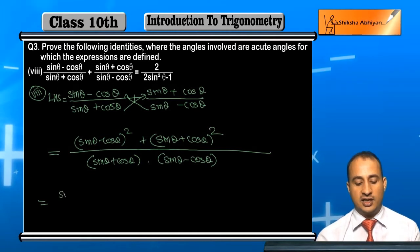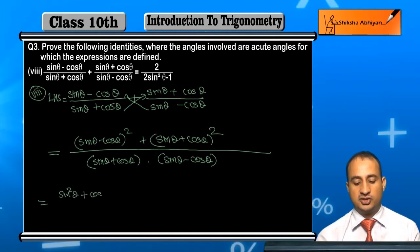Now on the upper side, if you take sine theta minus cos theta whole square, it will be a square, that is sine square theta, plus b square, that is cos square theta, minus 2ab, that is 2 sine theta cos theta.